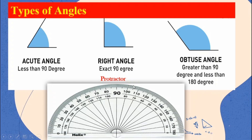The next one is what we call right angle. Right angle measures exactly 90 degrees. It would be easy for you to identify a right angle because it looks like the letter L. The third angle is what we call obtuse angle. An obtuse angle measures greater than 90 degrees and less than 180 degrees — it could be 100 up to 170 degrees, facing to your left or facing to your right.